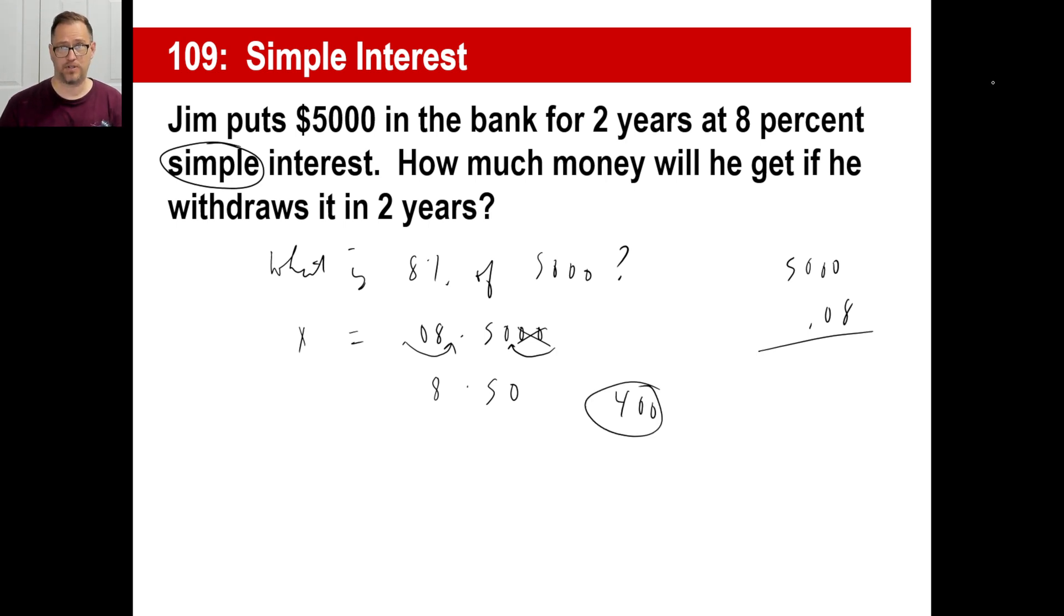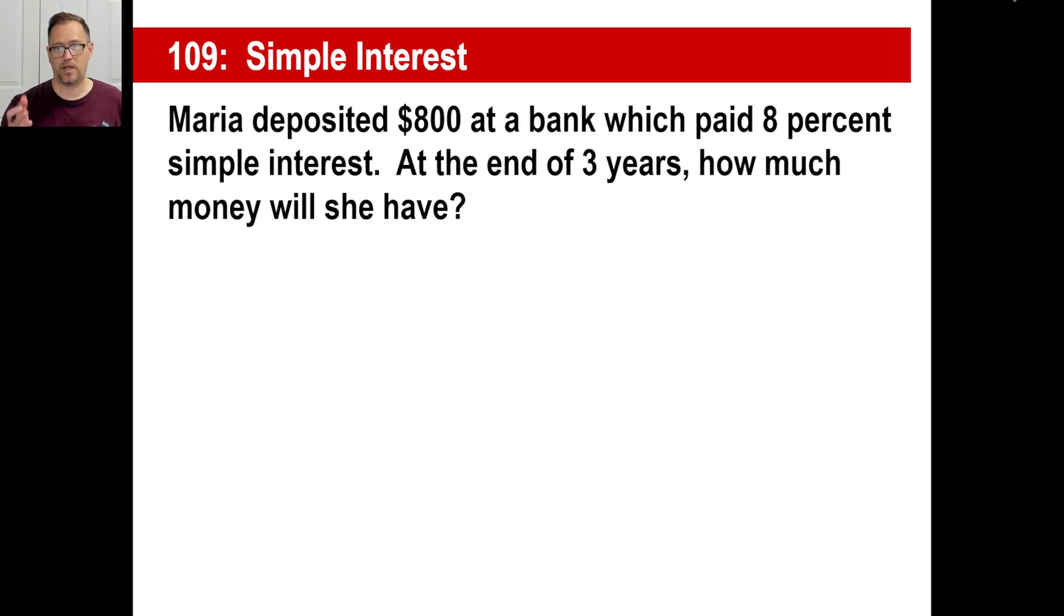Okay. Simple interest means that he earns $400 each year. So he earns $400 the first year and $400 the second year, which is $800 plus the 5,000. He gets $5,800 in two years. That's simple interest. All right. Let's do another one.